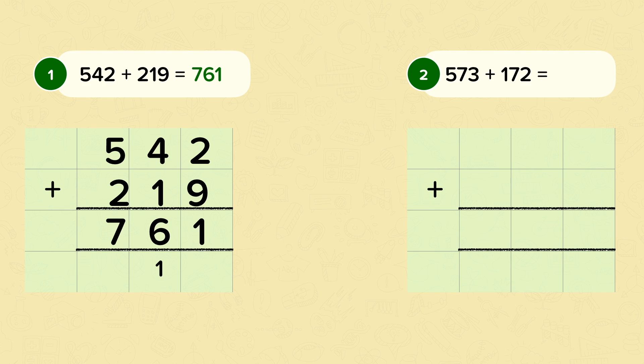Number two. So starting with the ones again. Three, add two, is five. Seven, add seven, is fourteen. You can't put fourteen in the tens column. So you put the four in and then you exchange the one over to the hundreds.